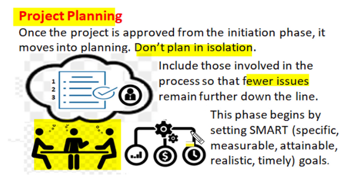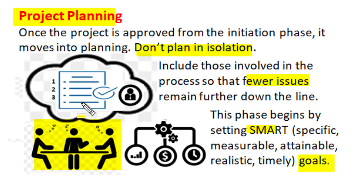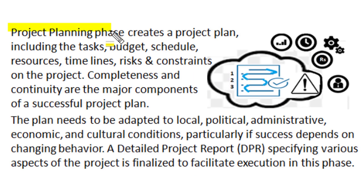This project planning phase sets SMART goals — SMART means Specific, Measurable, Attainable, Realistic, and Timely. That means at the project planning stage, the goals which are set should be very specific so everyone gets the same meaning for those goals. They are measurable, attainable, realistic, and can be achieved in a specified time frame.